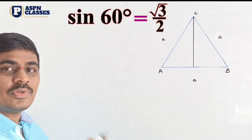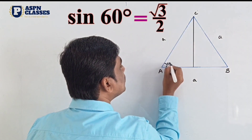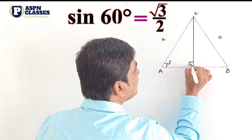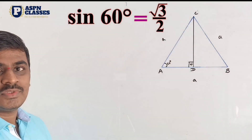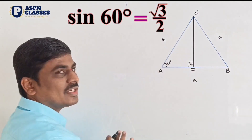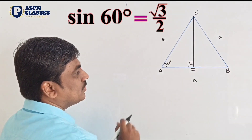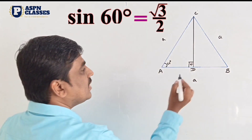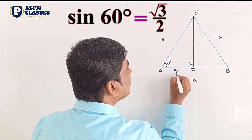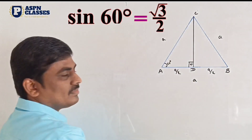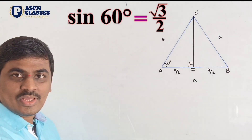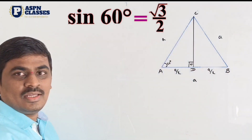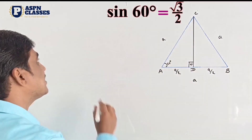We know that in the equilateral triangle all angles are 60 degrees. Drawing a perpendicular, this angle is 90 degrees and we call the foot D. So this angle is 60 degrees. We consider sin of 60 degrees. The complete side is a, and the perpendicular bisects BC, so BD equals DC equals a/2. We can see this result for the sine of 60 degrees using the sin(θ) formula.